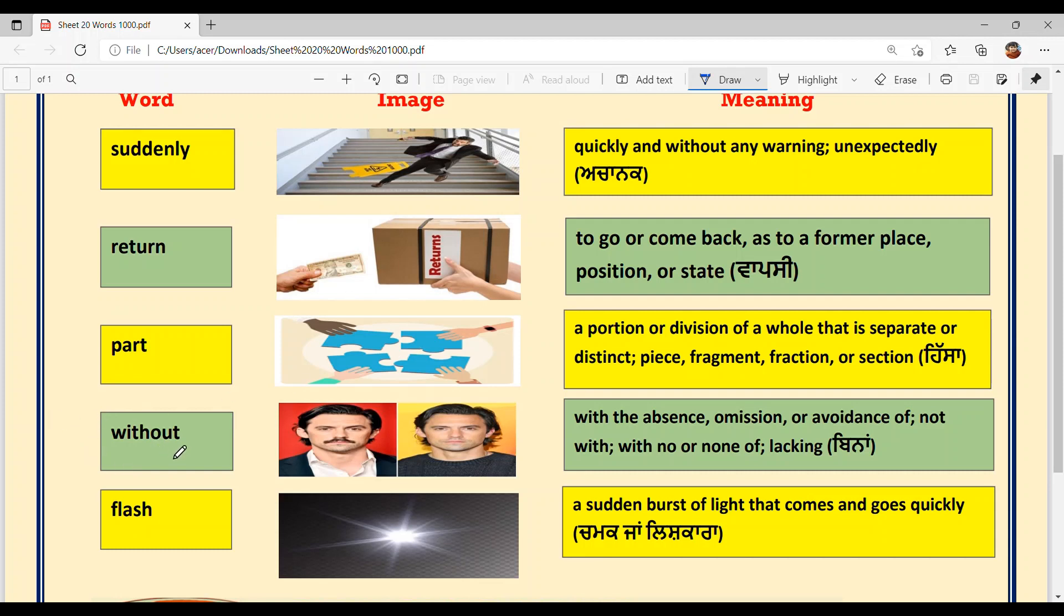Next, W-I-T-H-O-U-T, without. Punjabi cha bina. With the absence, omission or avoidance of, not with, with no or none of lacking. Now you can see ki is picture vich us admi de face te moustache hai.